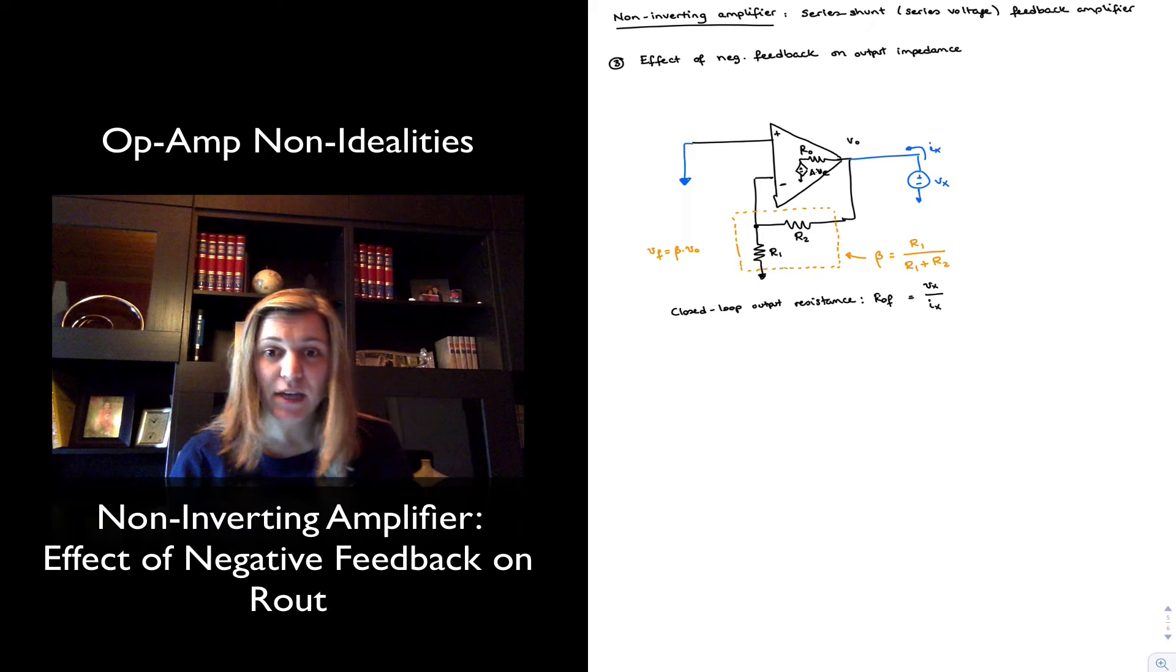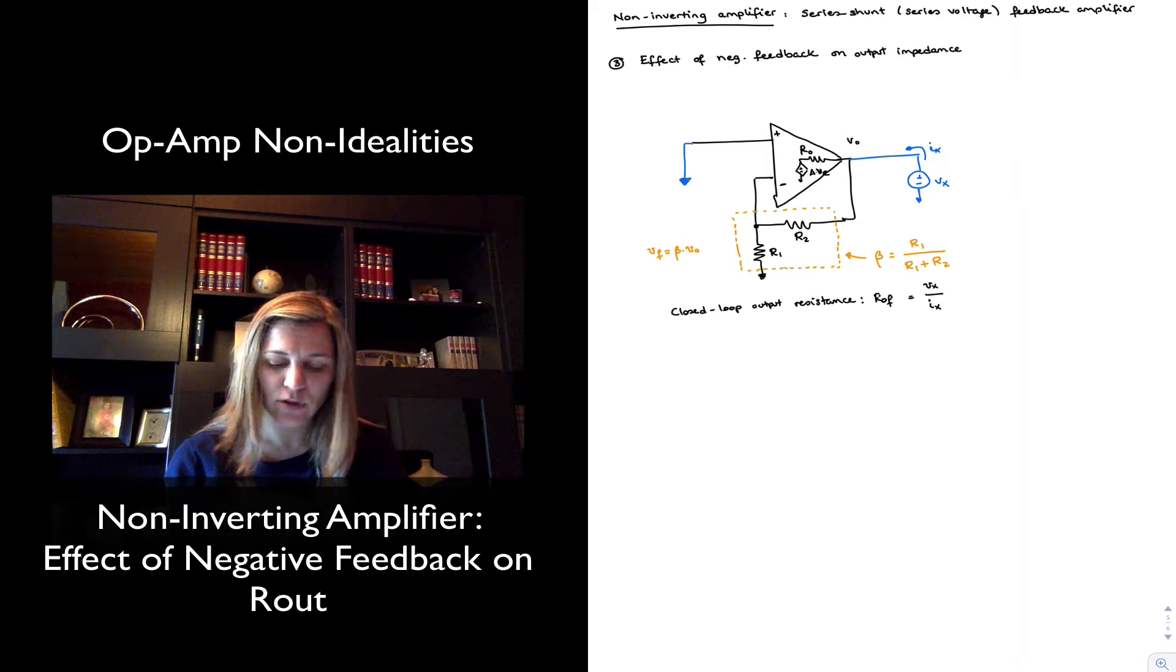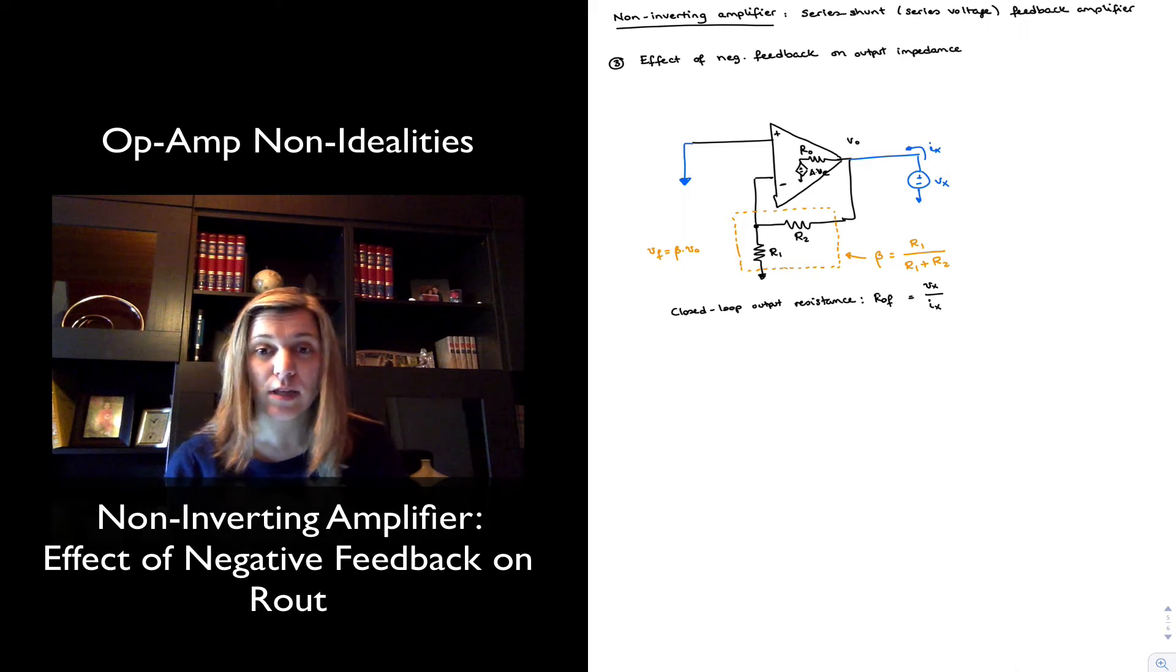Notice that I have made slight modifications to my circuit. To calculate the output resistance, I am first turning off the input sources. So I have turned off Vin, the Vin voltage source, and then I have connected a test source at the output, Vx, so that my output resistance for the overall feedback system is going to be the ratio of Vx to Ix.